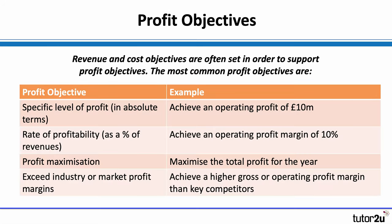The classic formula: profit is revenue less cost. Businesses therefore set profit objectives as well as revenue and cost objectives. These are particularly common in larger businesses, especially those whose shares are traded on stock markets. They'll talk about a target level of profitability in terms of the absolute amount — for example, making a profit of £10 million a year — but also in terms of profitability ratios such as net profit margin or operating profit margin. This is especially important when competitors have higher profit margins, giving a clear reason to set an objective to at least match, or ideally beat, them.